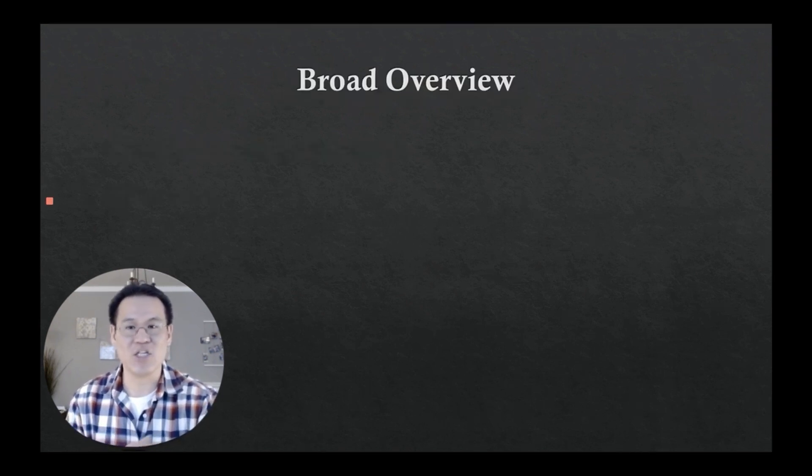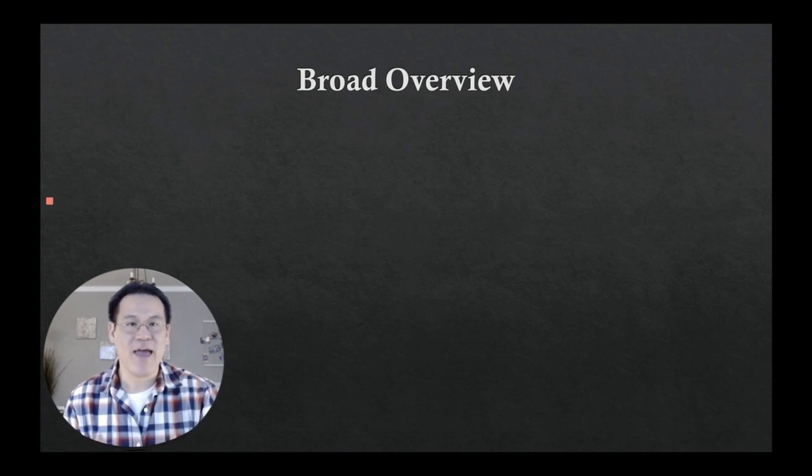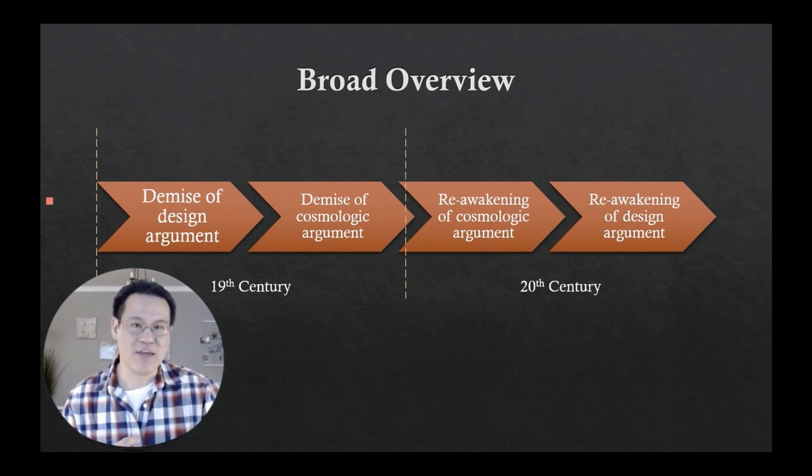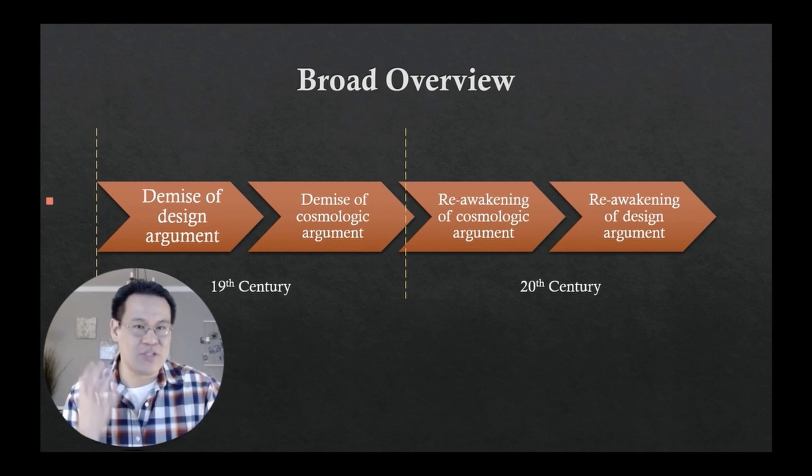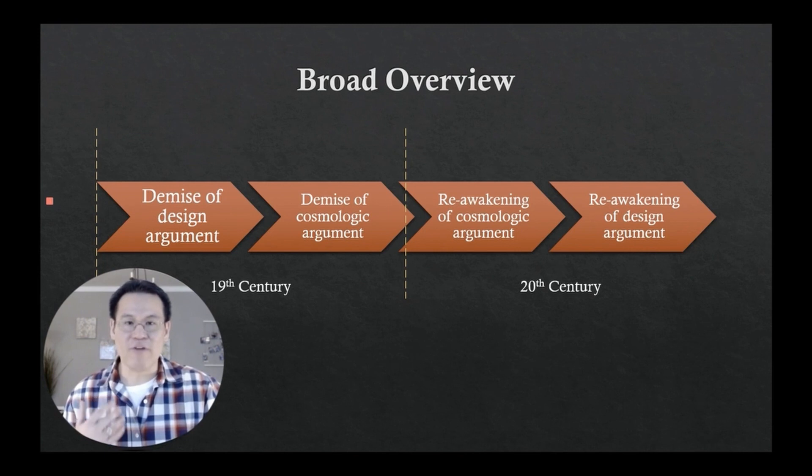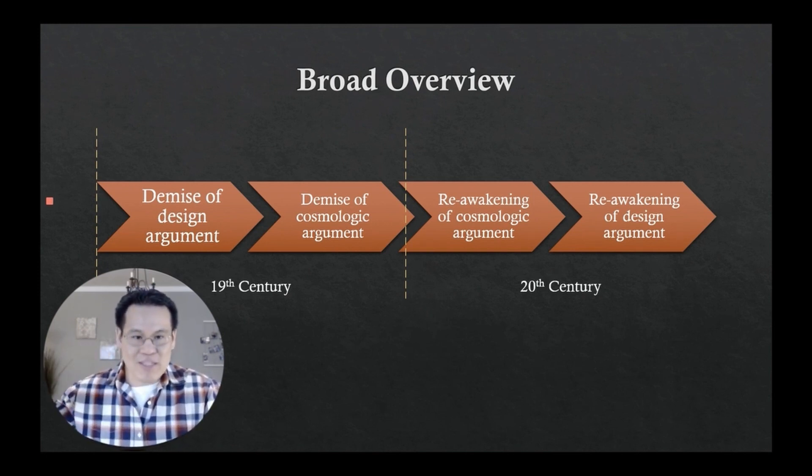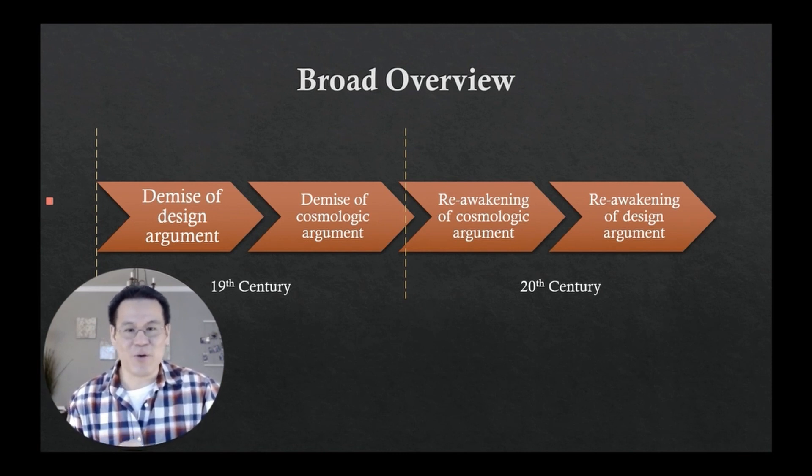So I'd like to start today with just a broad overview of this topic of science and faith. How did this debate come up in history? What were some of the main arguments for and against it? And what we're going to do is we're going to take a walk-through of history in the 19th and 20th centuries, both the philosophy and mostly science, looking at the demise and then the reawakening of two main arguments, the design argument and the cosmological argument. I know for some of you, this might be a little bit of a review. For others, it might go pretty fast. Don't worry. This is just an overview. We'll have time throughout the rest of our course to really hit these more in depth.